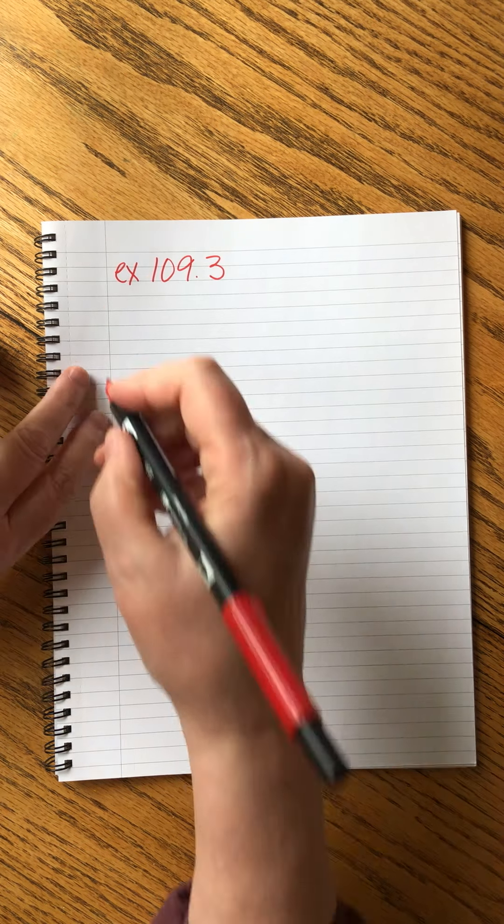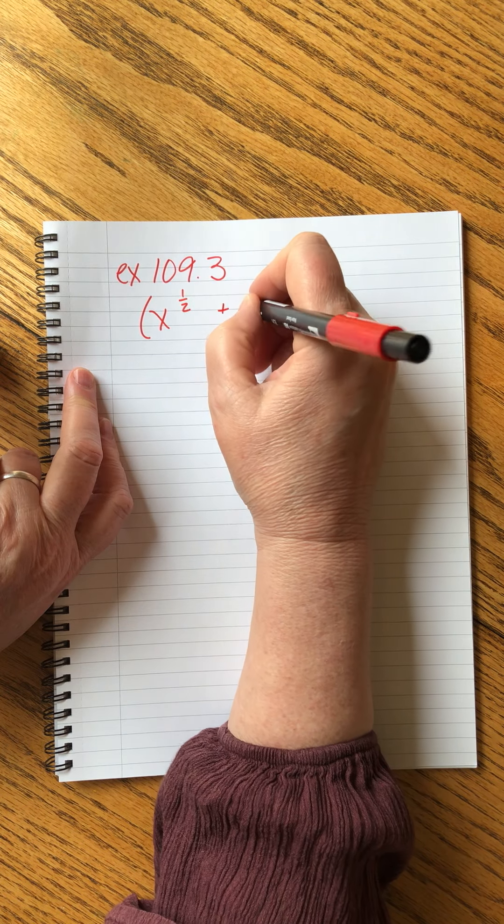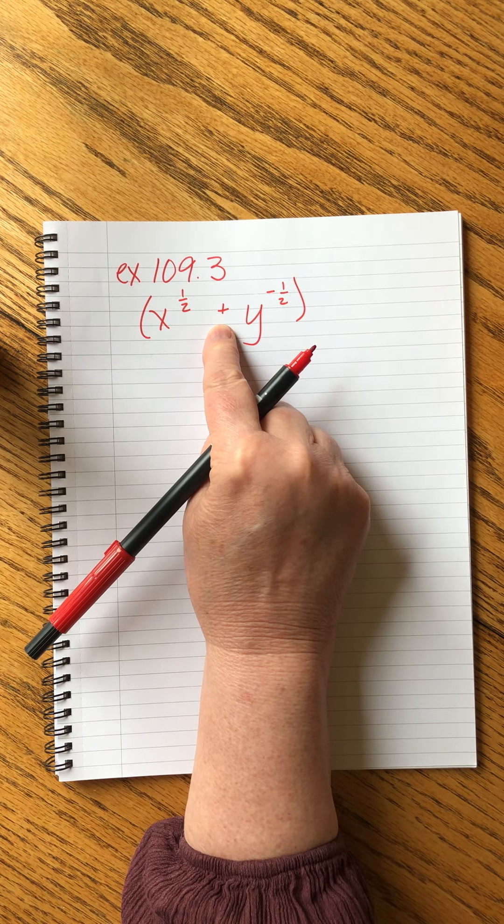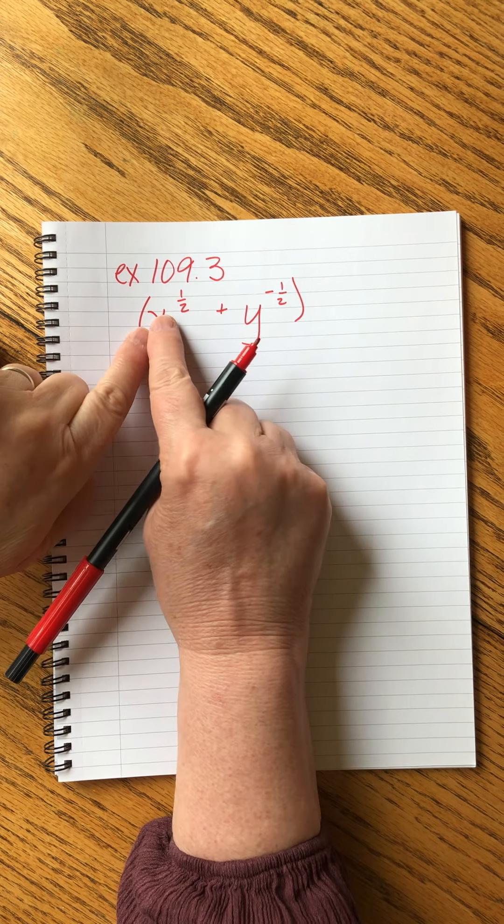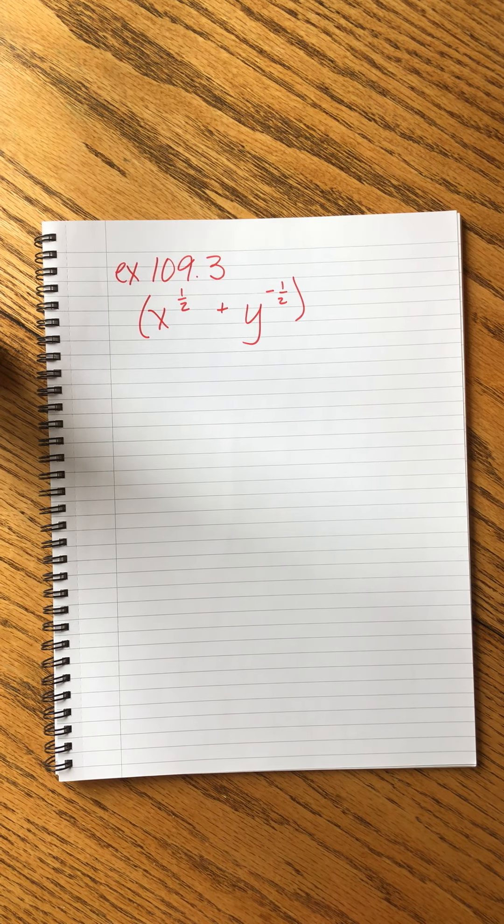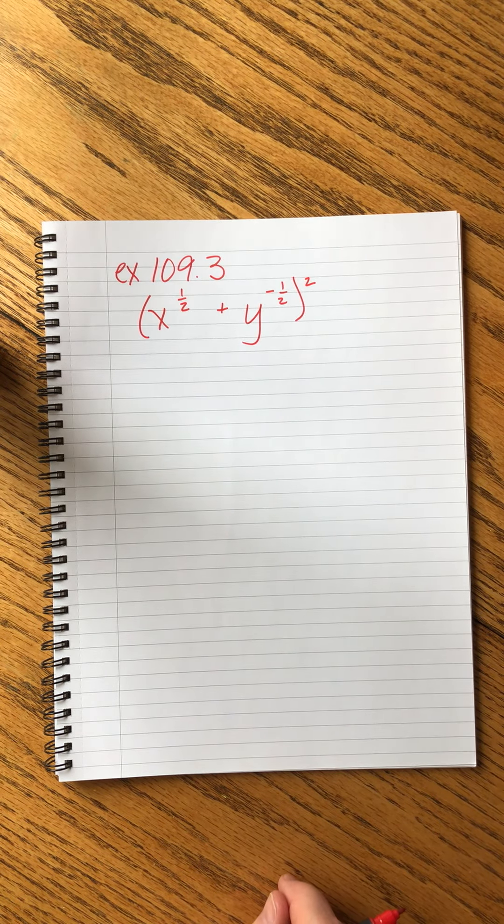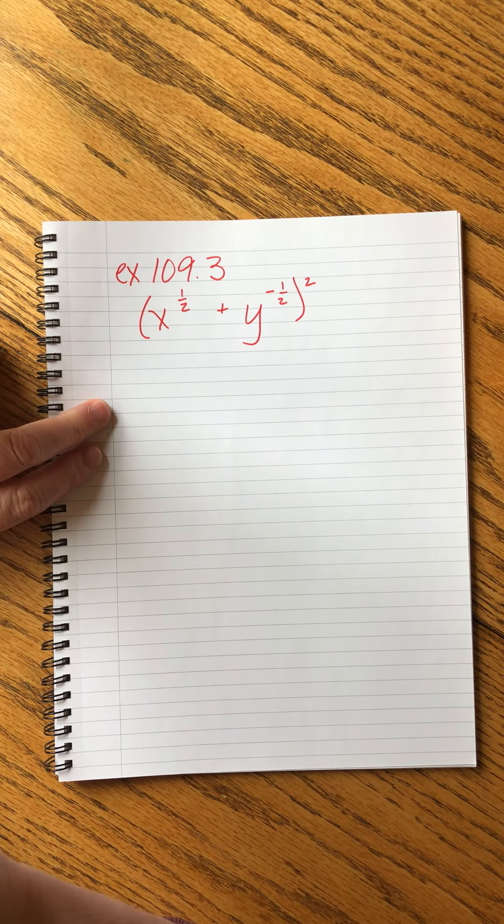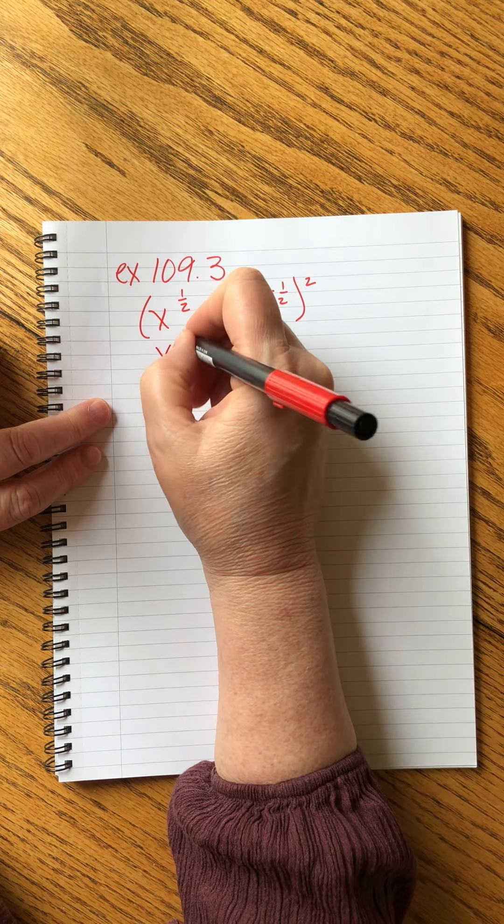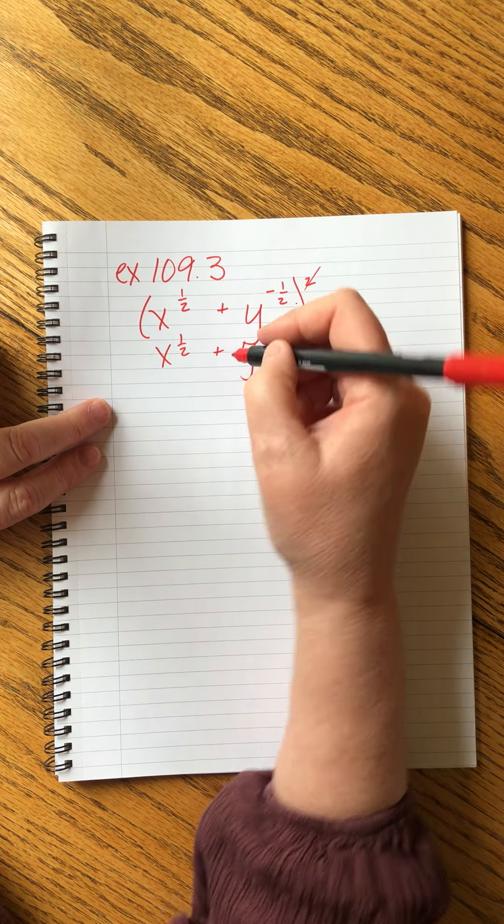Example 109.3. Expand. And as soon as we write this down, you know what we're in for. That is what causes us the problem. If these were being multiplied, we could do it like the first problem and just apply the exponent to each one of the bases. But it's this plus sign that drives us crazy, and we're going to square all of these. So what I'm going to do this time is what I would recommend you do in homework. You don't have to write the whole thing over. This will be the first one that we multiply, and then we'll just write the second one below it.